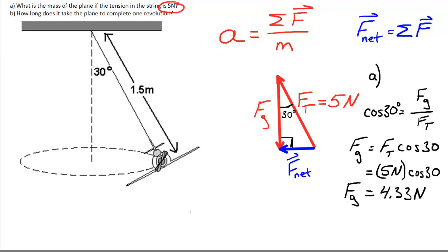Now remember, F_g is simply mass times gravity. And we're assuming we're on Earth in this question. So I get mg is 4.33 newtons. Dividing both sides by g, I get the mass of the plane equivalent to 0.44 kilograms. So there's my mass of the plane.